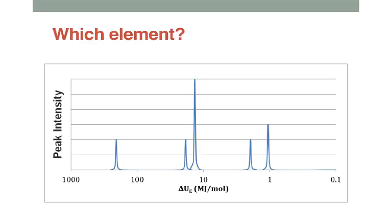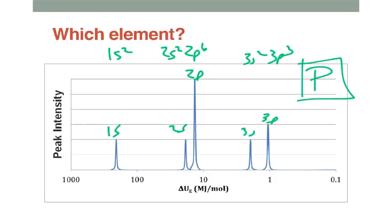For this one, which element would you say? I would label my orbitals and figure out what my electron configuration is. So I would say that this is 1s2, 2s2, 2p6, 3s2, 3p3. So this represents the 3p orbital, 3s orbital, 2p orbital, 2s orbital, and 1s orbital. If I count up my electrons, 1, 2, 3, 4, 5, 6, 7, 8, 9, 10, 11, 12, 13, 14, 15, then I say, this must be phosphorus, number 15.